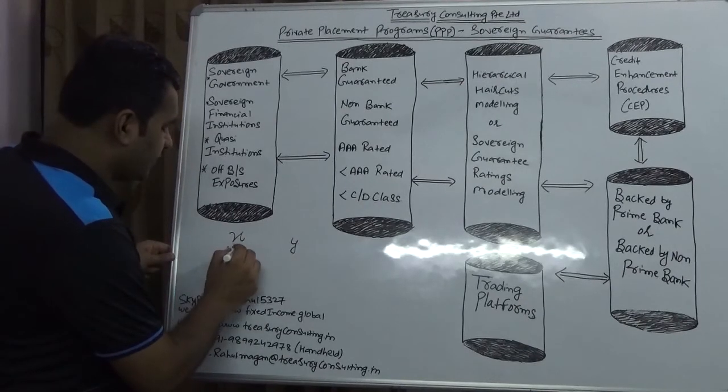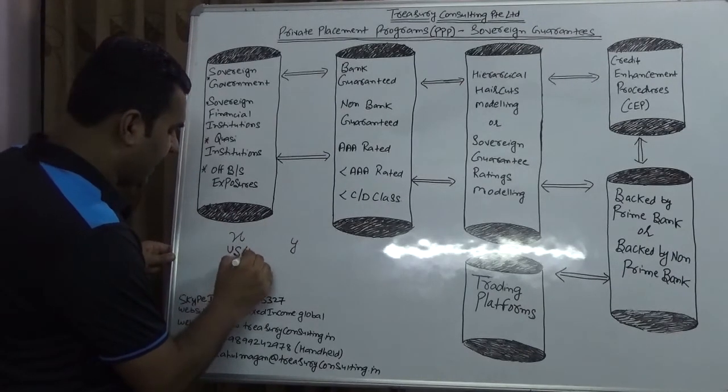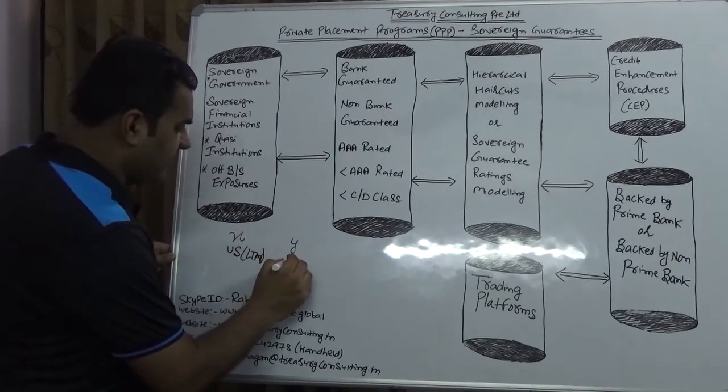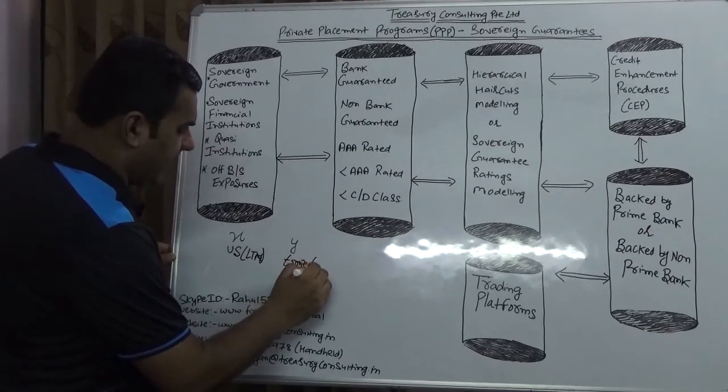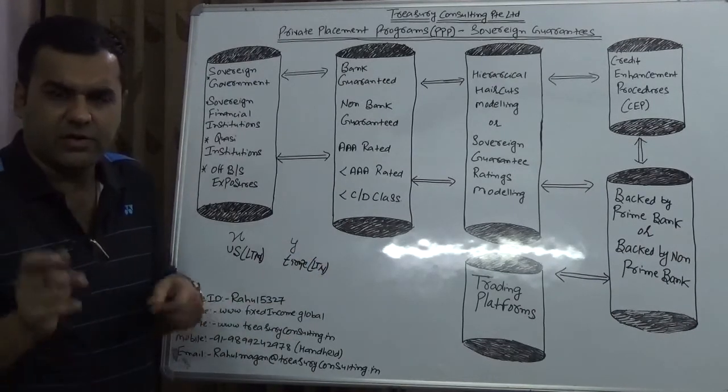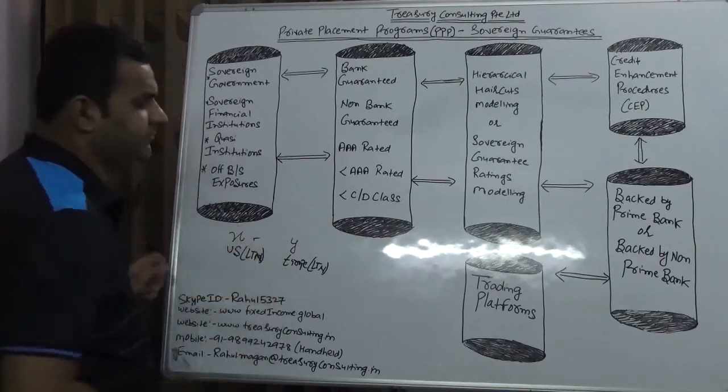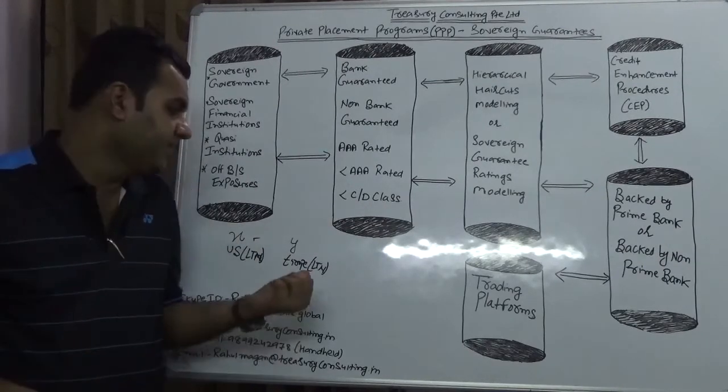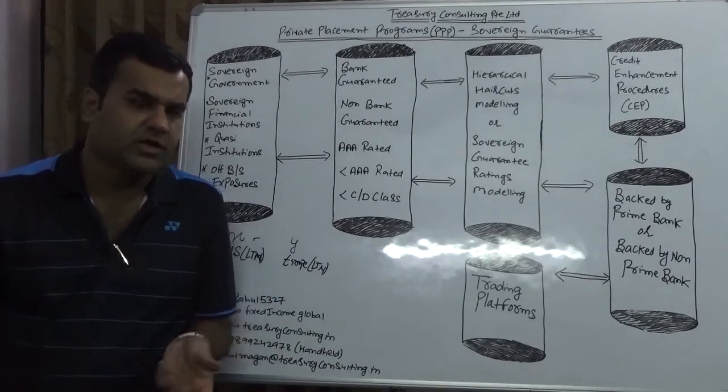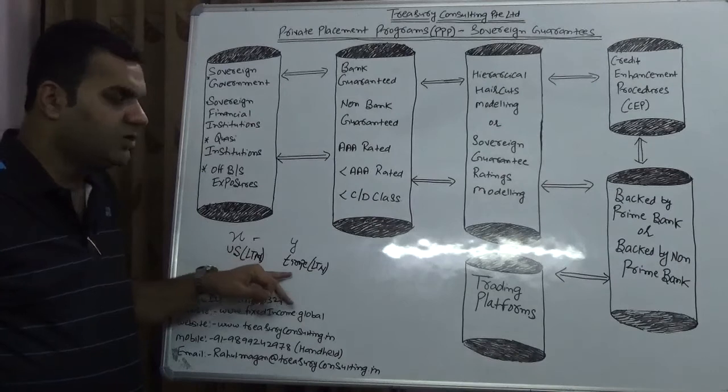The participants is Mr. X and Mr. Y. Mr. X holds the Sovereign Guarantee of US, in bracket I refer LTN. Mr. Y refers to Europe, in bracket I refer LTN. A PPP player including me would tick here, not here. I'm not saying we don't tick here, but we would be reluctant. I would love to tick here then to tick here.